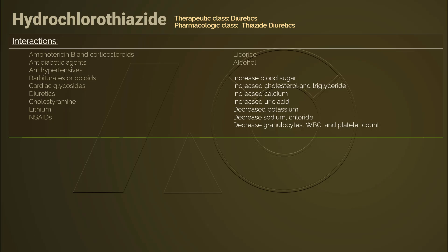When using hydrochlorothiazide with amphotericin B and corticosteroids, there is an increased risk of hypokalemia. When used together with anti-diabetic agents, adjust doses because hydrochlorothiazide decreases the secretion of insulin, leading to hyperglycemia. There will be an additive effect when thiazides are used with antihypertensives. If used with opioids or barbiturates, risk for orthostatic hypotension increases. There is an increased risk for digoxin toxicity when using a cardiac glycoside with hydrochlorothiazide because of hypokalemia. Severe dehydration and electrolyte imbalance may be induced when using thiazide with other diuretics.